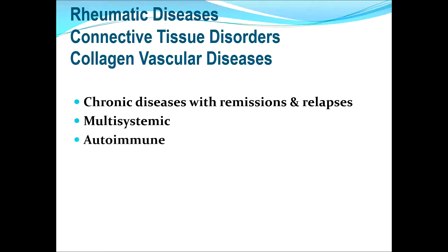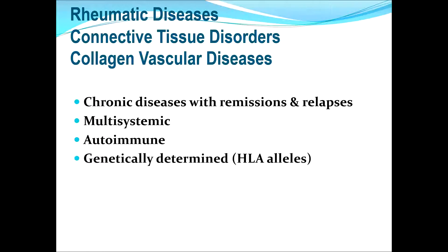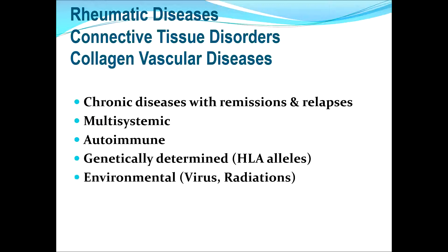These are all autoimmune disorders, which means the body recognizes structures in the bones and joints as non-self and mounts an immune response against them, and thus the disease process starts and progresses. These disorders are genetically determined — we have genetic predisposition based on specific histocompatibility leukocyte antigen alleles, so the disease frequently runs in families. There is also an important influence of environment, such as viruses or radiation, but the major part is genetic predisposition.